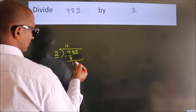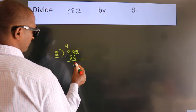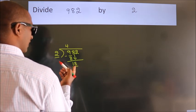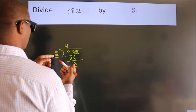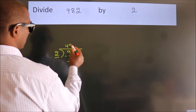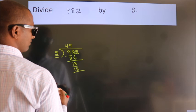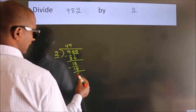After this, bring down the beside number. So, 8 down, giving us 18. When do we get 18 in the 2 table? 2 times 9 is 18. Now we subtract and get 0.